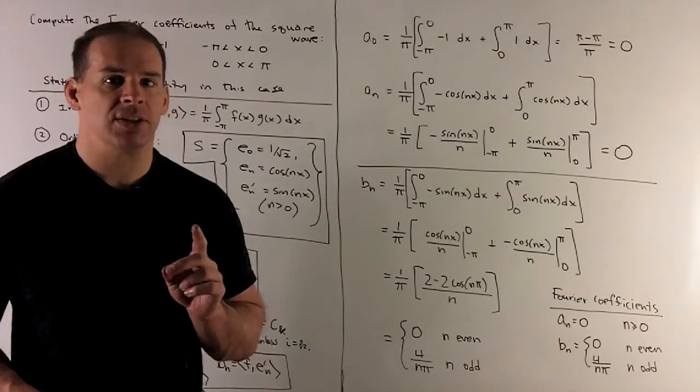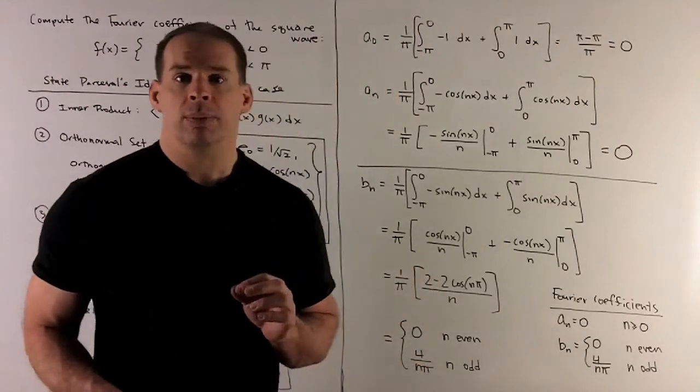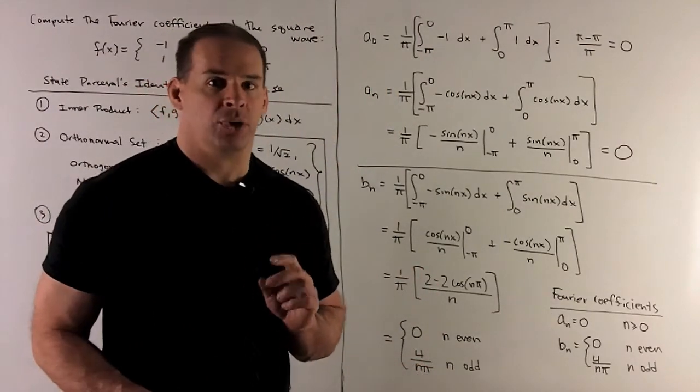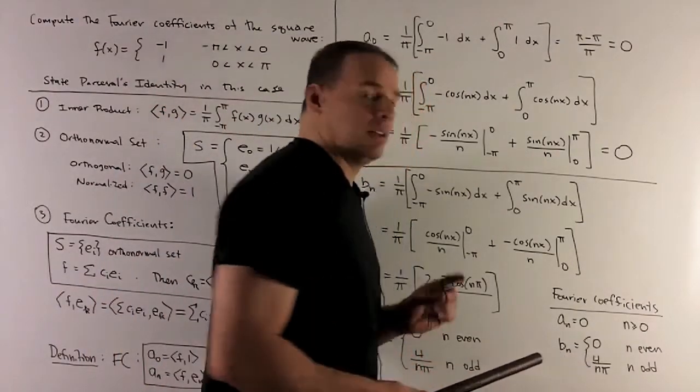So to summarize, Fourier coefficients. If you take any a, you're going to have zero. If you take b sub n, you're going to get zero if n is even. Four over n pi if n is odd.